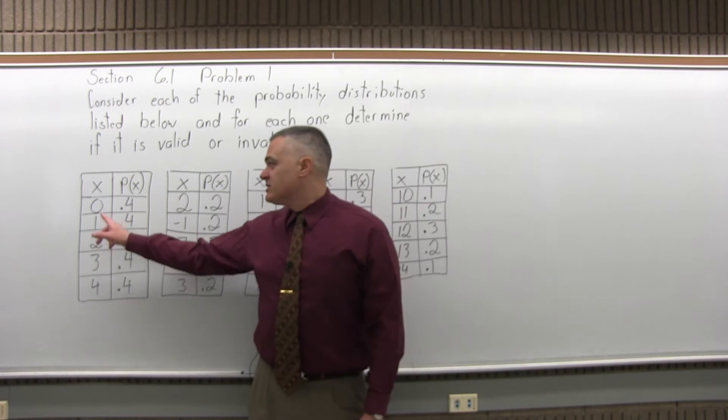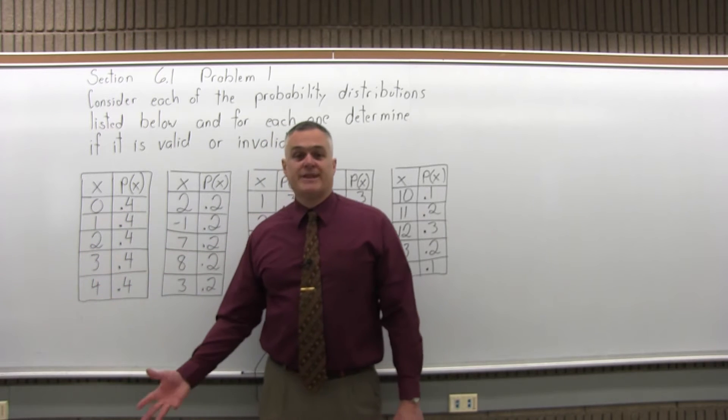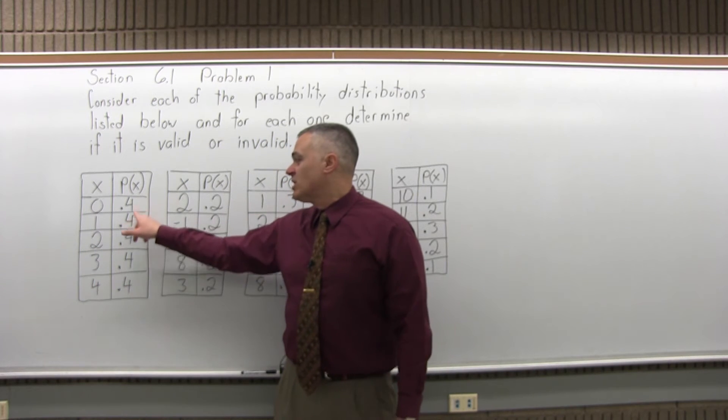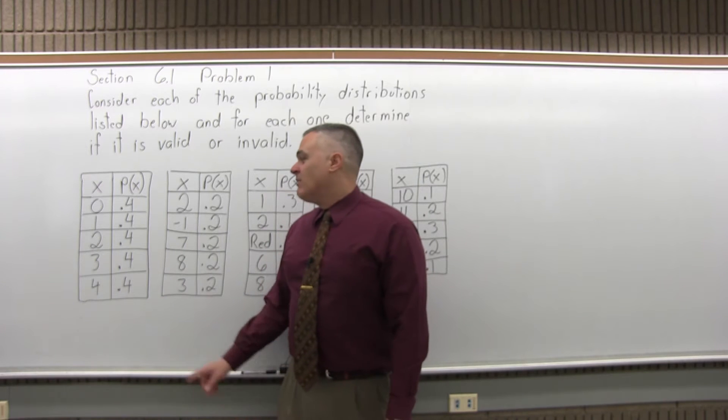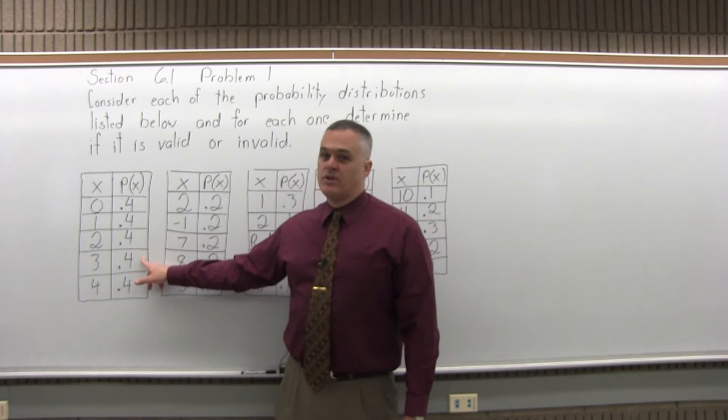So as we look at the first probability distribution, everything in the first column is a number. That's good. Everything in the second column is between 0 and 1. That's good. But the total is a lot more than 1.